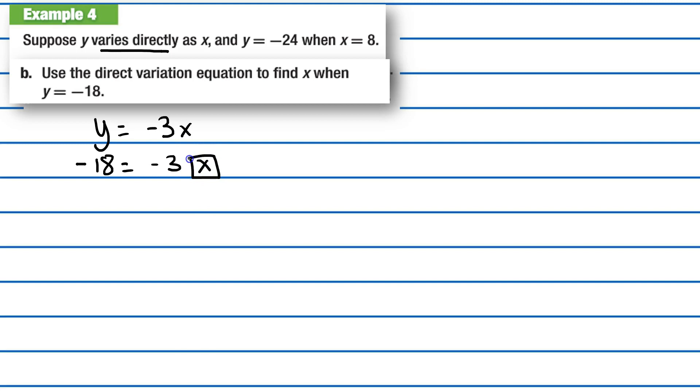Solve for x. Divide by negative 3, so x equals 6. Therefore we know that x equals 6 when y equals negative 18, but only during that time. And that's it.